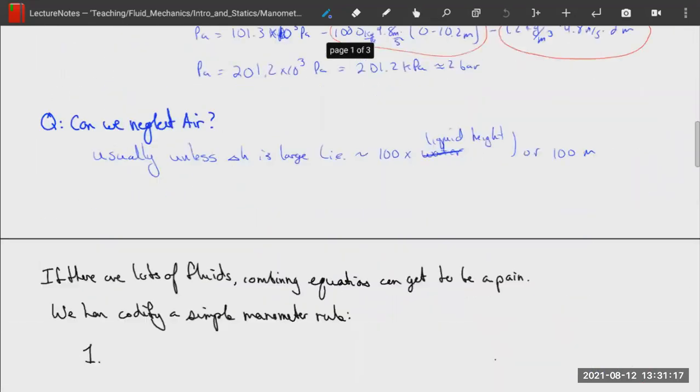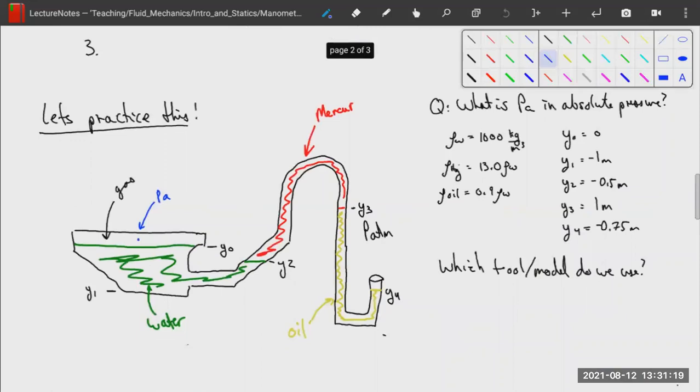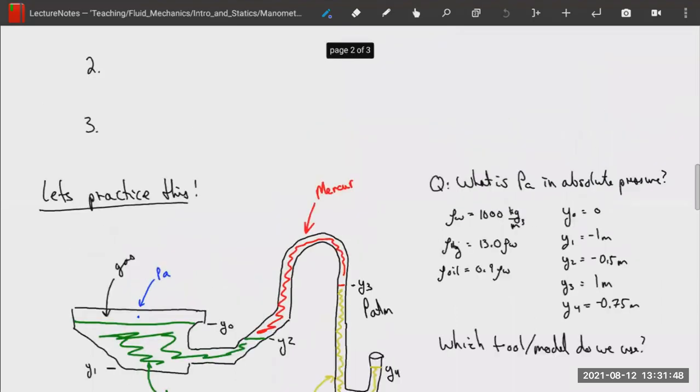One of the issues is, like we talked about, it's possible, although this is kind of an extreme example, to have multiple different fluids in a manometer, and that can make analysis just tedious and error-prone when you try to apply the hydrostatic equation over and over and over again and combine equations. For example, in this case, we have gas, water, mercury, and oil all together in a manometer. And we're going to be able to analyze that really easily once we learn a simple manometer rule.